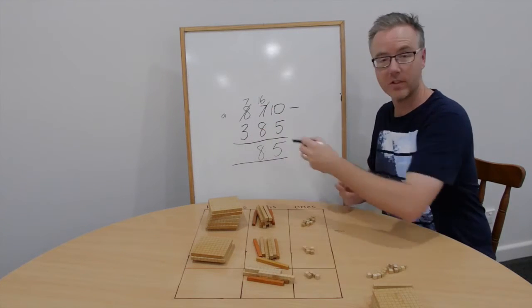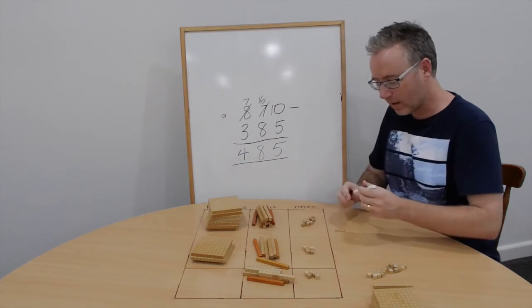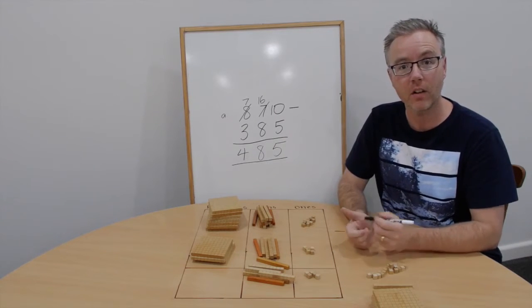And now 700 take away 300. 400, the answer. 485. Check your estimate.